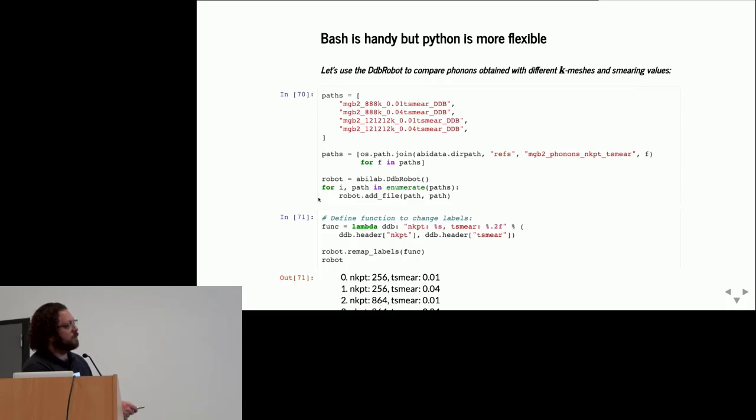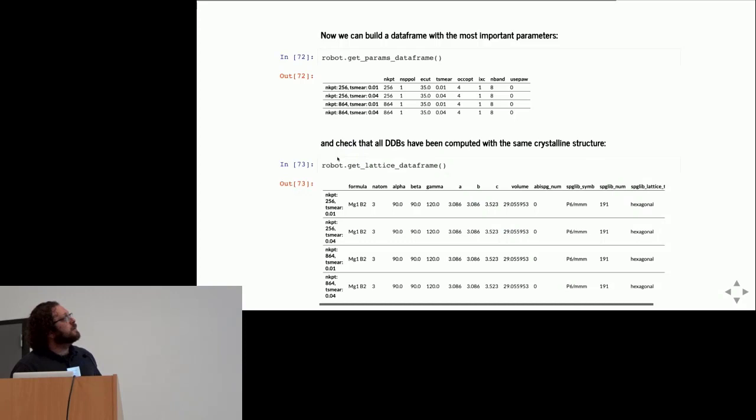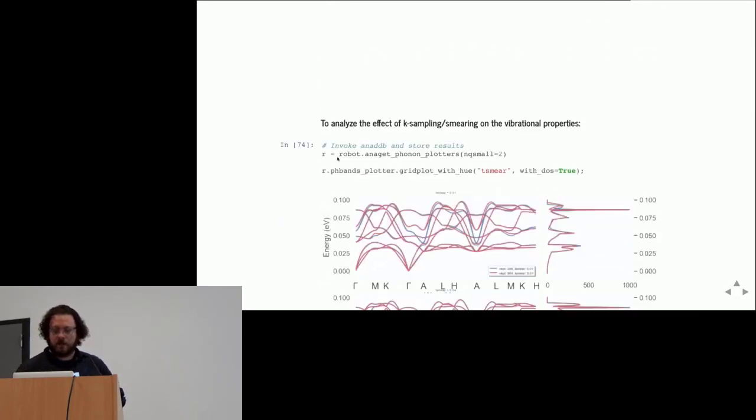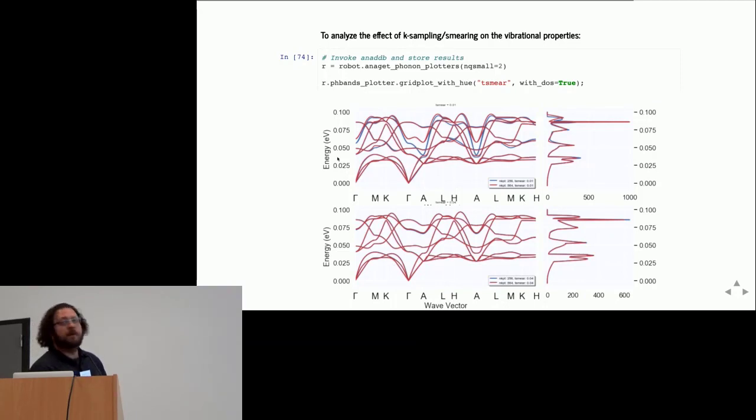First of all, I load all the files in the robot. I change the name of the labels because I have access to the metadata, the header, and I want to have the number of k-points and the smearing in the name of the file. Now I start to use the robot API to create tables. These are pandas dataframes that are converted directly into HTML. This is a table with the most important parameters of the calculation, a similar table for the crystalline structure. If I want to plot and compare the phonon band structure as a function of smearing, I can group using this option, and the phonon band structures computed with the same smearing but different k-meshes show that there are some branches that are quite sensitive to the k-point sampling.